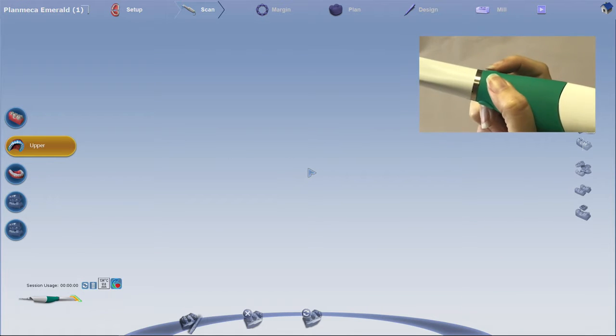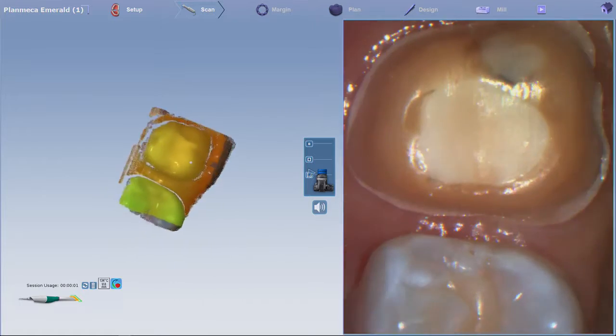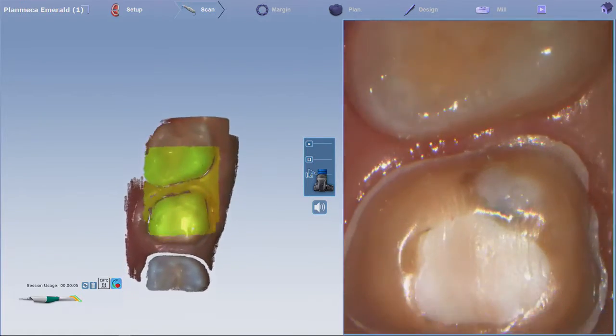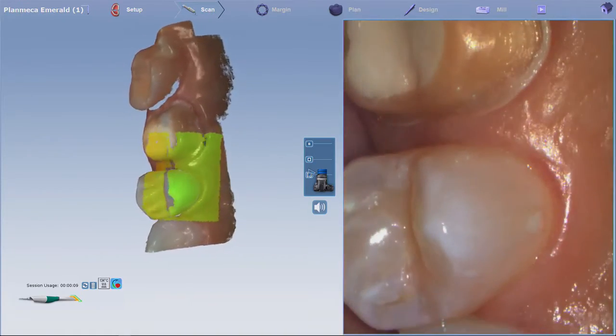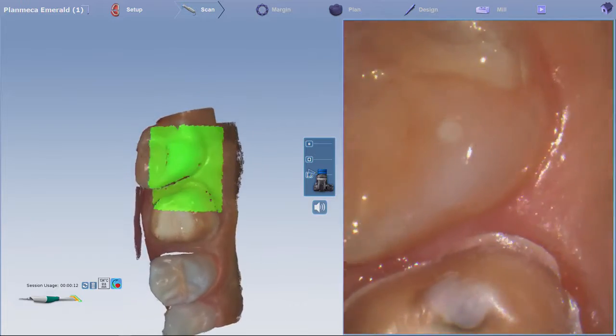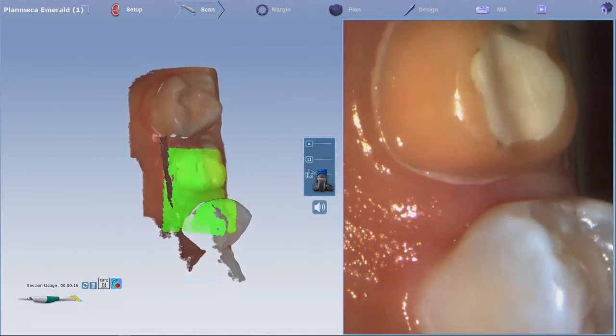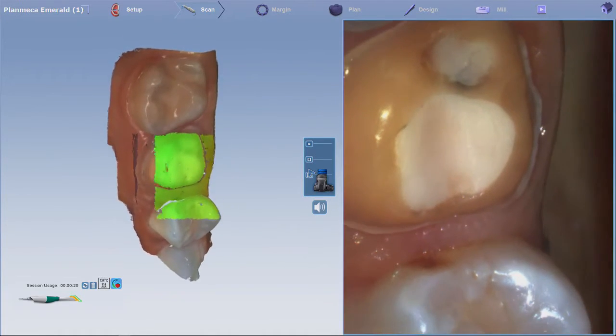Press the top button to activate the scanner. Because the scanner activates immediately, it'll be easier to start when it's in position in the mouth. Scan the preparation, the opposing, and the bite as you normally would.